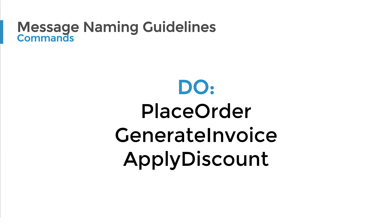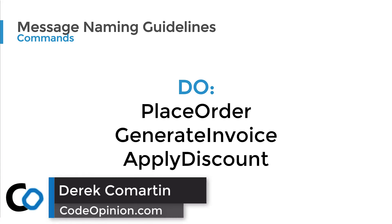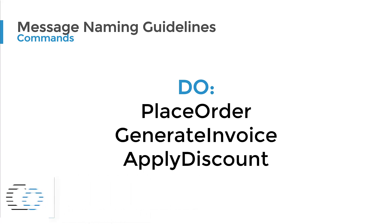For commands, the naming convention generally follows a verb followed by a noun. Good examples are: place order, generate invoice, and apply discount. Those are the kinds of names you want. What I try to avoid is using CRUD terminology — so avoiding create, update, delete, or save as the verb prefix. The reason is to gain deeper insight into what users and processes are actually doing. Is it really 'creating a customer'? Or is it 'placing an order'?